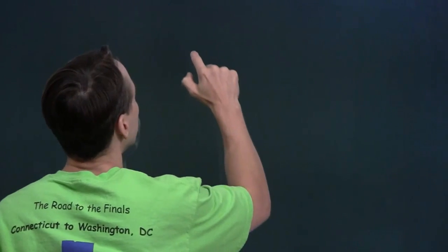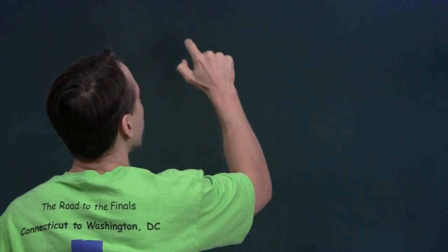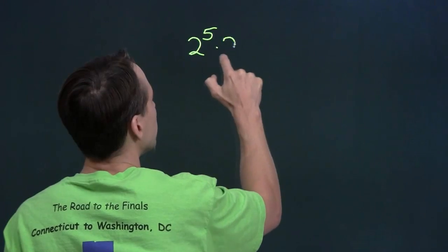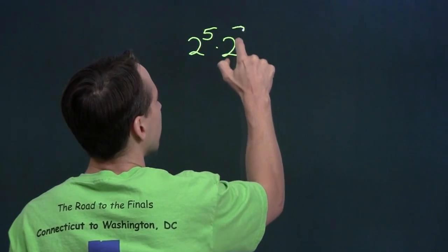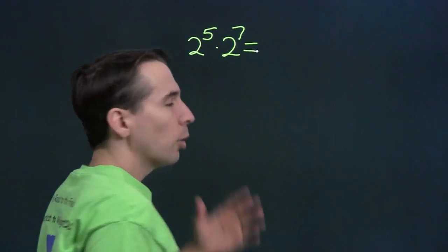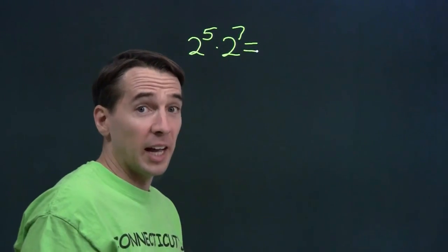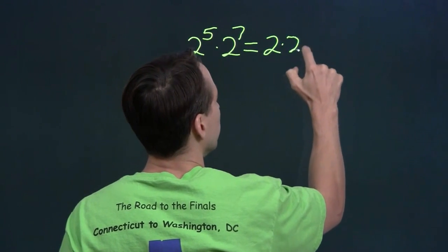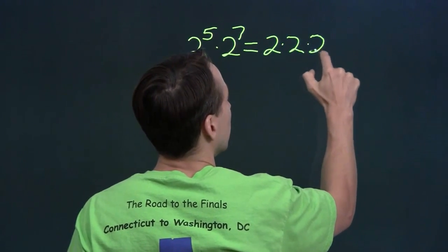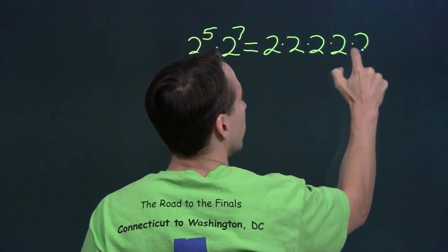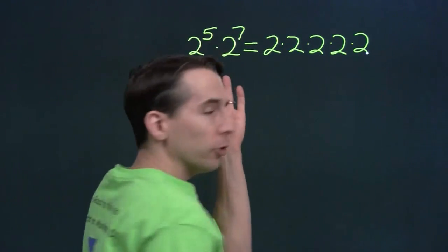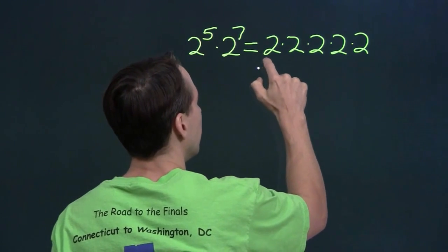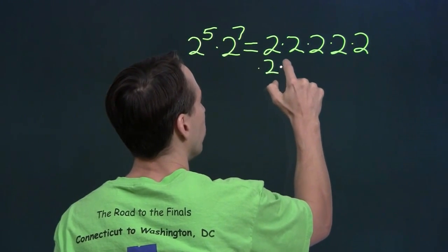So we'll start with two to the fifth times two to the seventh. I'll go ahead and write two to the fifth out — that's the product of five twos: two times two times two times two times two. And when we multiply by two to the seventh, that means we multiply in seven more twos.